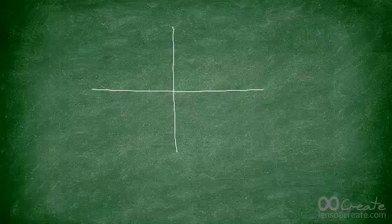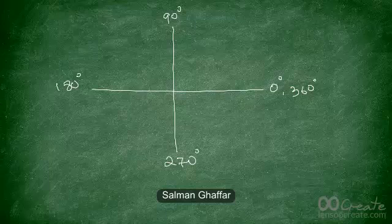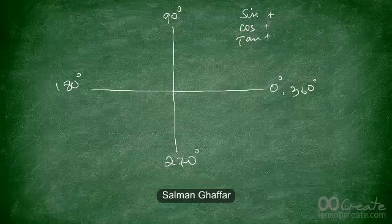If we divide the full 360 degrees into four quadrants, we get angles 0°, 90°, 180°, 270°, and 360°. For any angle between 0 and 90 degrees — the first quadrant — all trigonometric ratios, sine, cosine, and tan, give positive values.